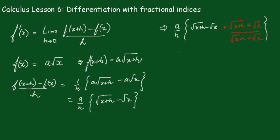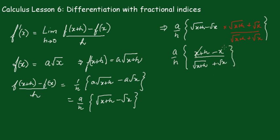Because that really is one, that becomes a/h, and when you multiply these two together that gives (x+h) minus x, all over (√(x+h) plus √x). The h cancels, so this becomes a over (√(x+h) plus √x).